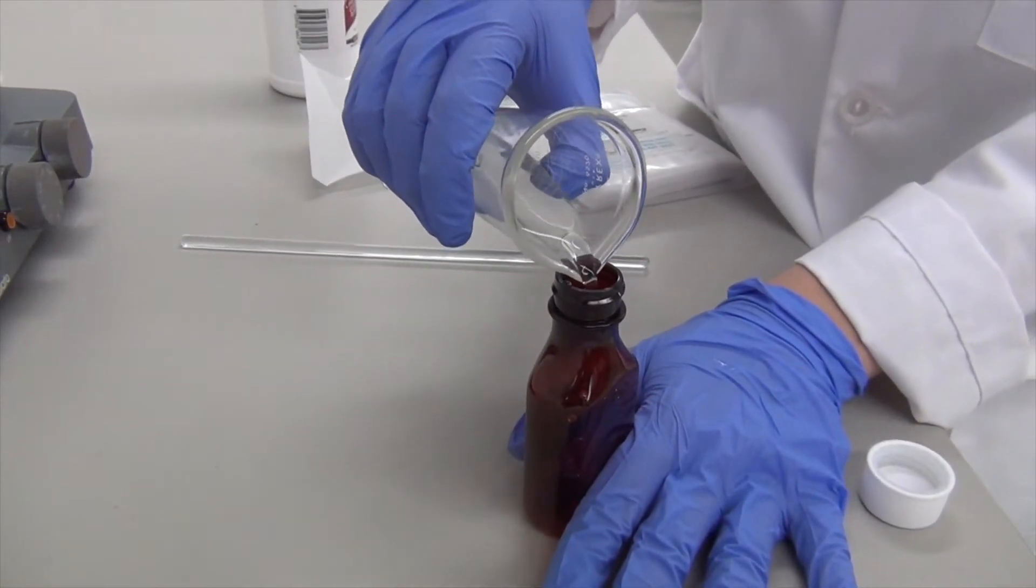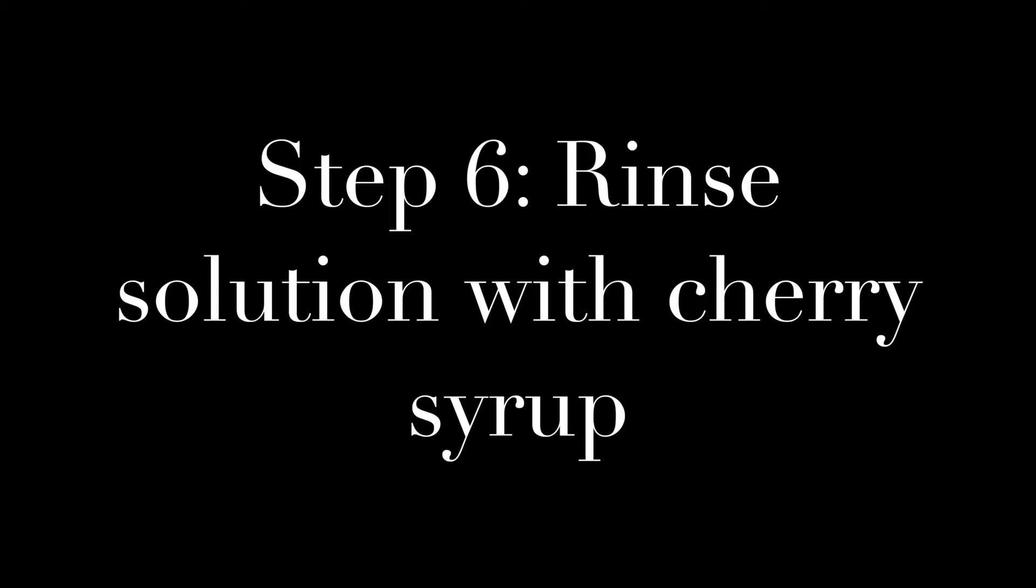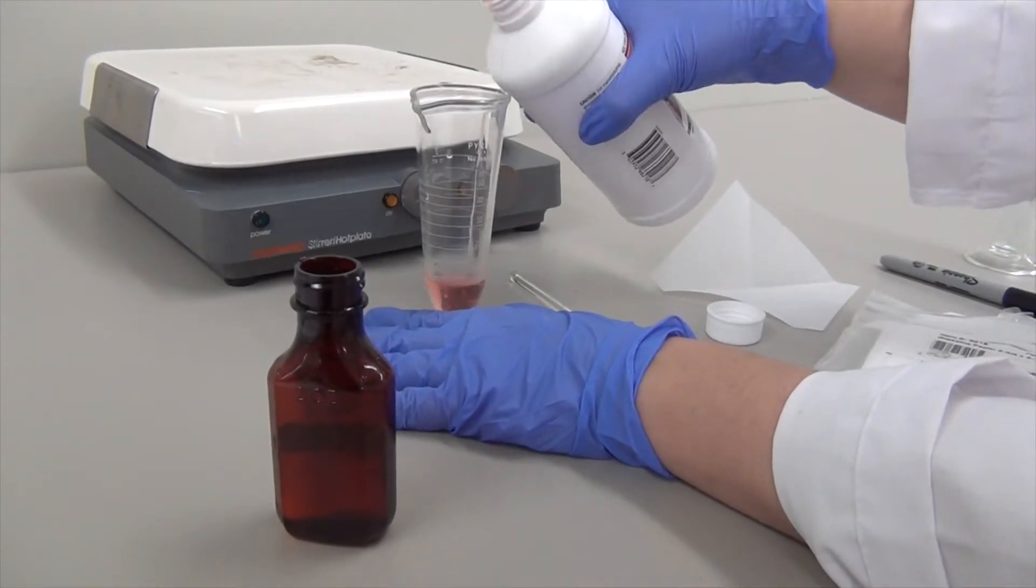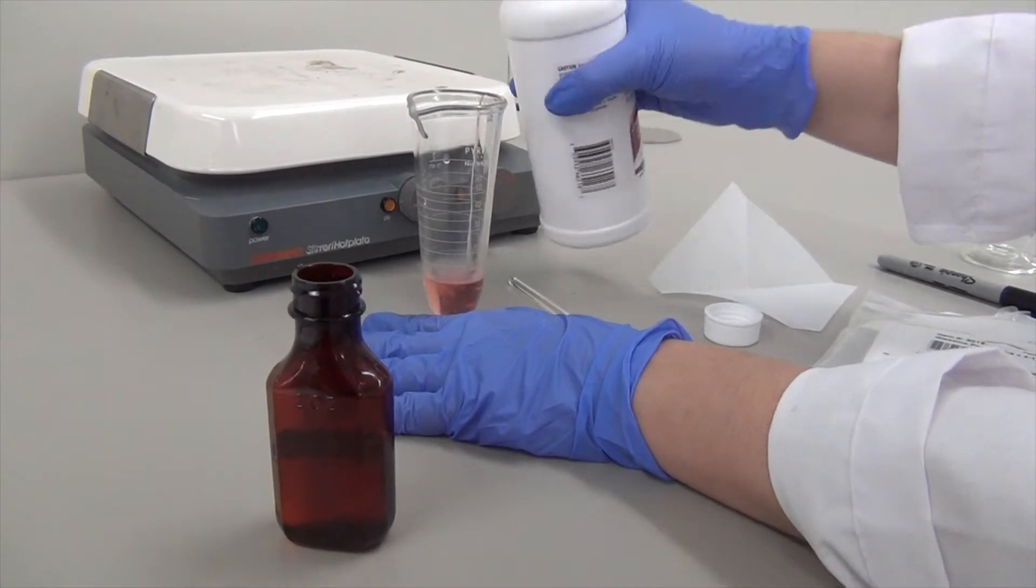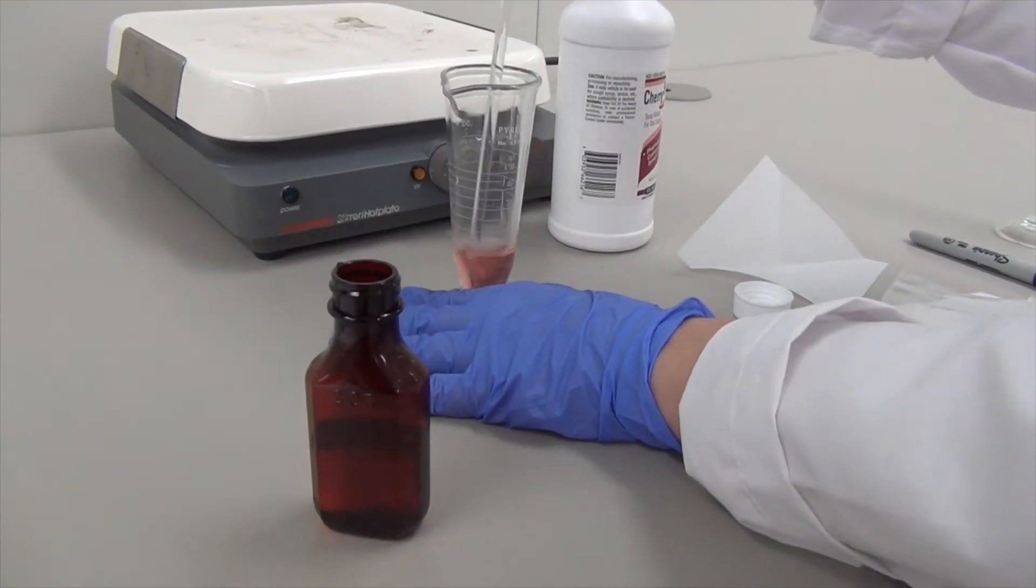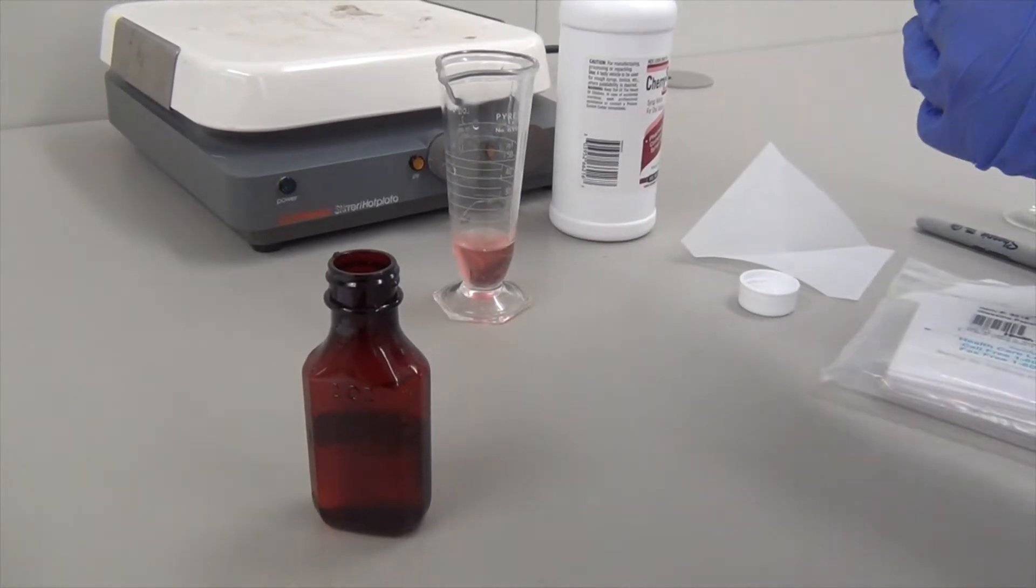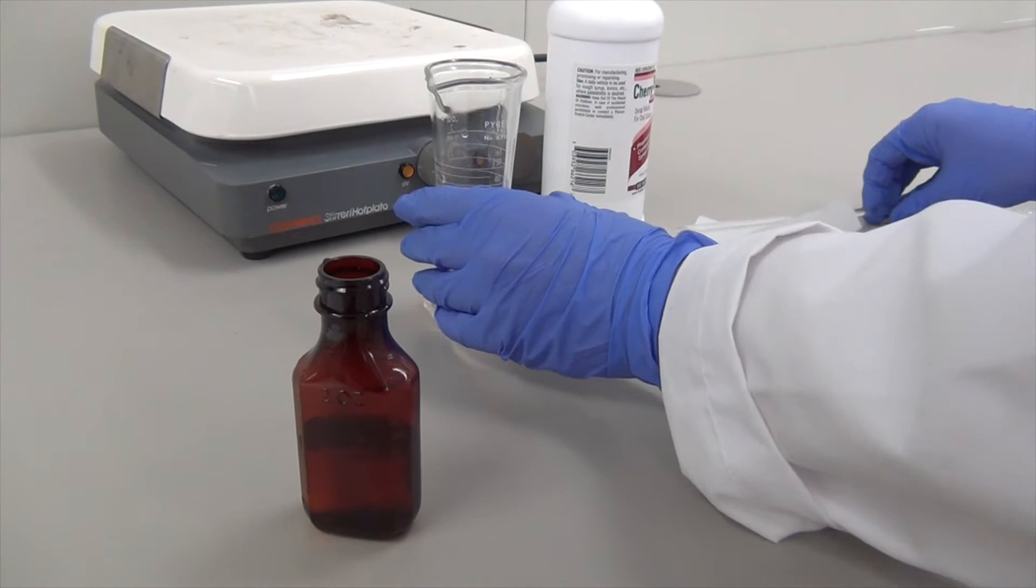Pour the solution into your amber bottle. For step six, you are going to rinse your solution using cherry syrup. You are going to add a total of 30 milliliters of cherry syrup to the bottle. Add 10 milliliter increments to the conical graduated cylinder and try rinsing as much of the solution as you can out of the cylinder and into the bottle.